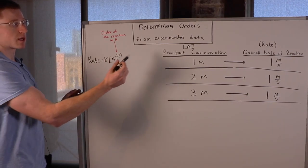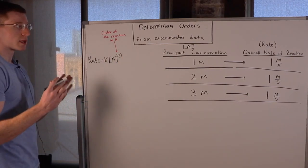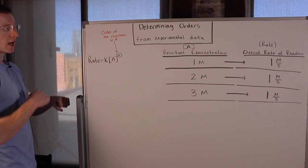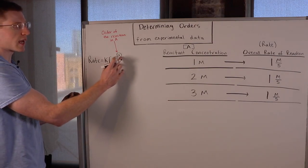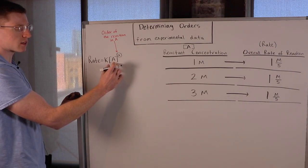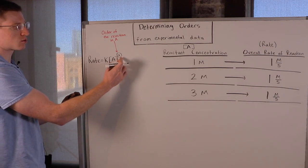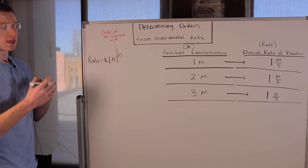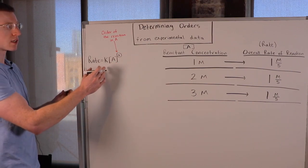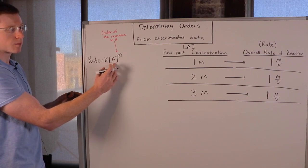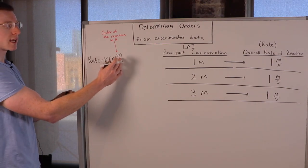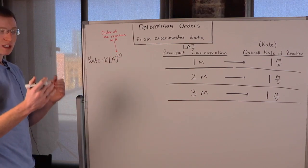In this video I'm going to show you how you determine orders from experimental data. Remember in the video where I showed you how to write a rate law, the orders are these exponents to which the reactant concentrations are raised. So x here would be the order of the reaction in A — if x were 3 we would say this reaction is third order in A. To actually determine this x we have to run some experiments.